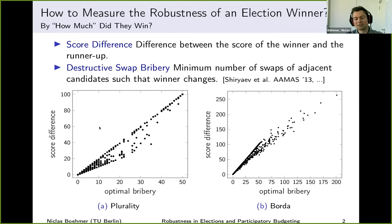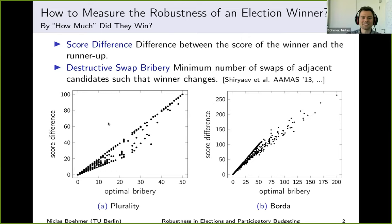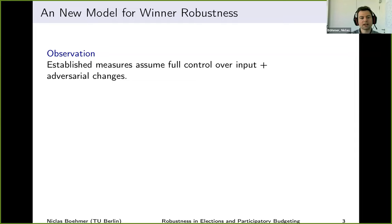Maybe the question has been answered and the talk is over — but it's not. We started thinking more about what the score difference and the minimum cost of destructive swap bribery actually correspond to. We noticed that both assume we have full control over the input and can make adversarial changes. For the destructive swap bribery, we just ask: is there a sequence of l swaps such that the winner changes? We only ask if there is at least one such sequence, which is insufficient to say this is the robustness of the election winner. We found this a bit unrealistic.